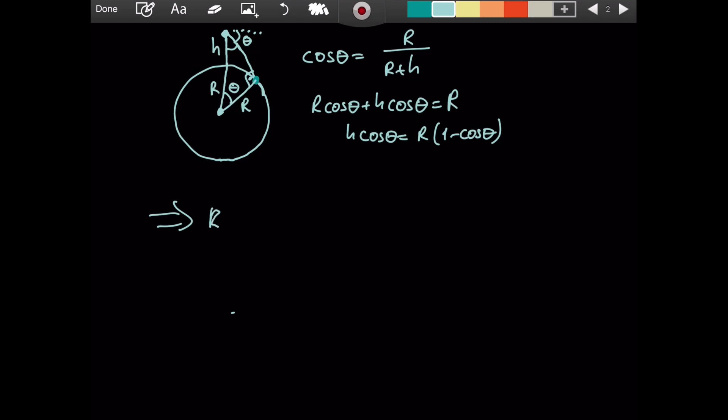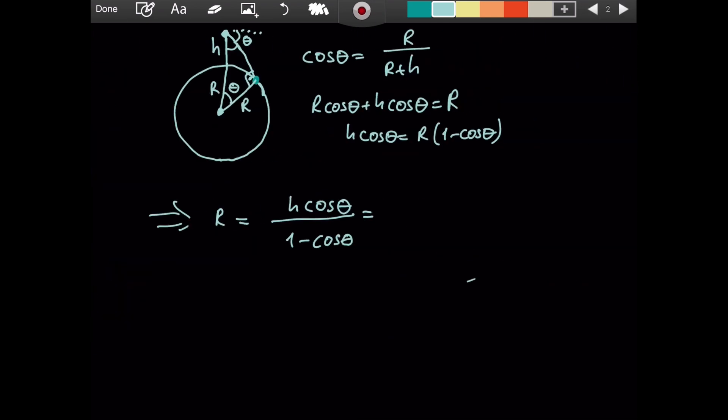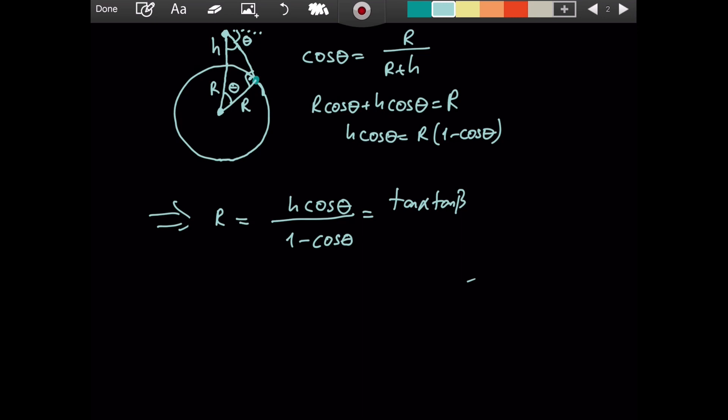So, R is equal to H cosine of theta over 1 minus cosine of theta. And I know what H is in terms of the measured quantity. So, let's just plug that in. We will have tangent alpha tangent beta over tangent alpha minus tangent beta. Then we have the other factors, cosine of theta, 1 minus cosine of theta. These are all factors. And then we have D, the amount that Biruni displaced horizontally. So, this formula gives you the radius of the earth.